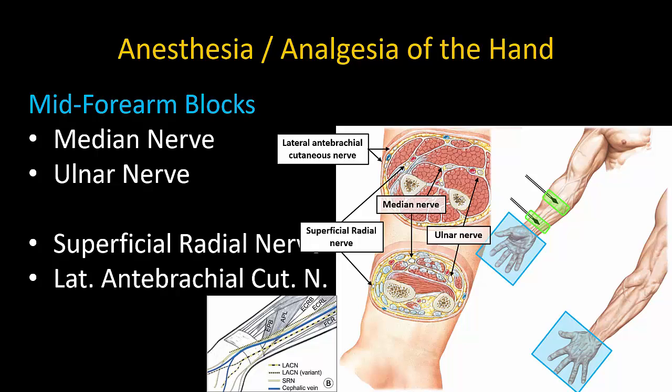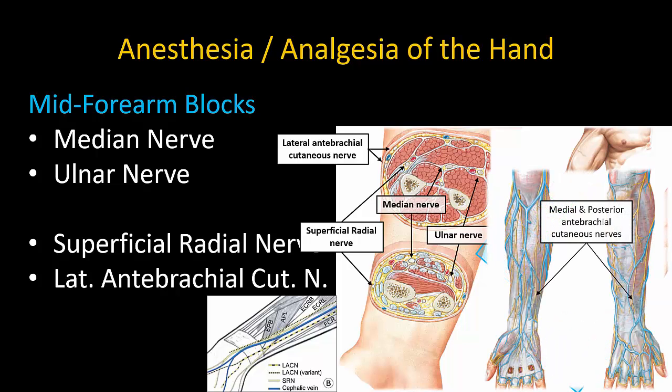Note that the median and ulnar nerves do not innervate any structures proximal to the wrist crease, and thus blocks of the other antebrachial nerves may also be needed if the incision extends proximal to the hand.